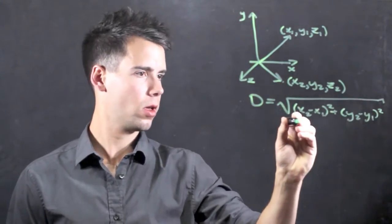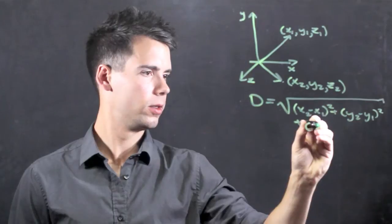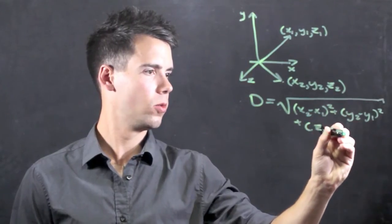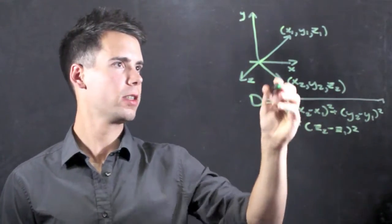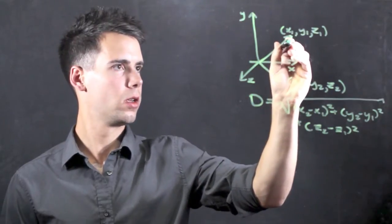And also the third term plus (z2 minus z1) squared. So now this gives you the distance from one point to the other.